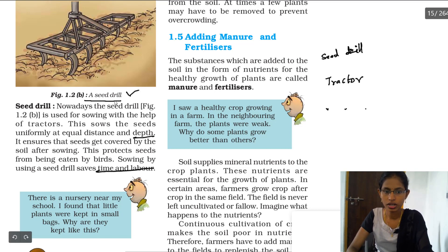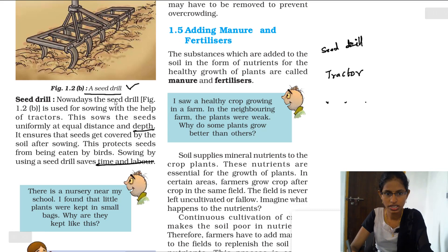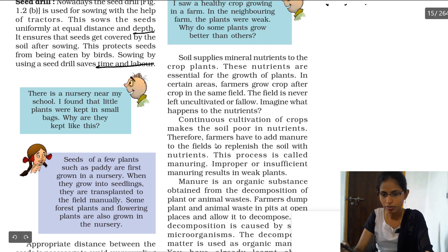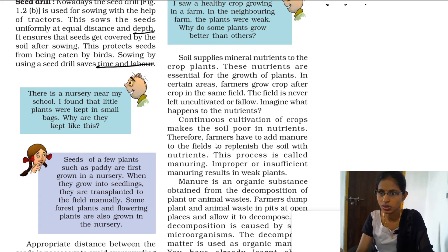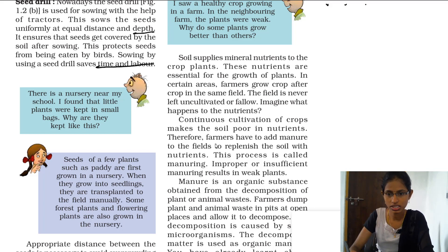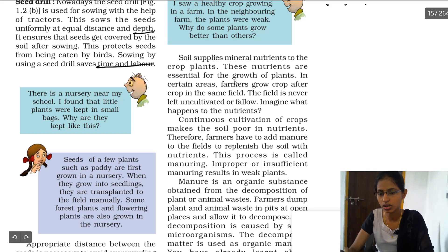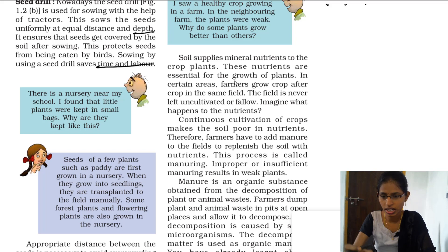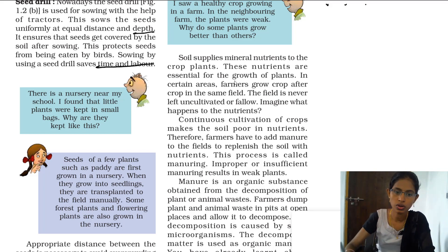Now, if you observe a nursery, you will see bag-like things in which small seedlings or small plants appear. This is because some seeds are not grown directly into the soil — they have to grow as seedlings first, and only then are the seedlings transplanted into the soil.